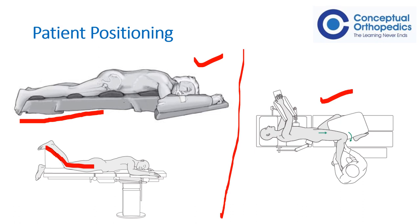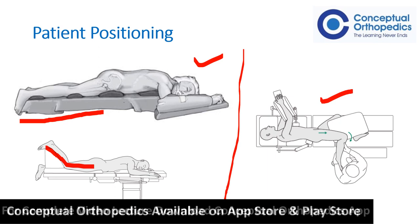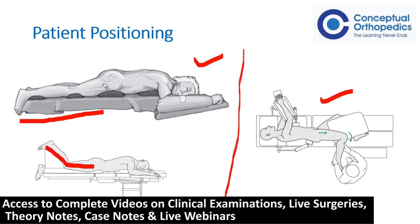The advantage of a lateral position would be that in case an extensive approach is required with anterior dislocation of the hip joint, we can do a trochanter flip osteotomy using a GANZ approach, which is an extension of the Kocher-Langenbeck approach. This can only be done if the patient is lateral. A trochanter flip osteotomy can be done in both prone and lateral, but the safe surgical dislocation can only be done in the lateral position.